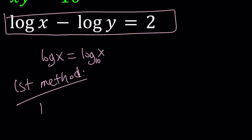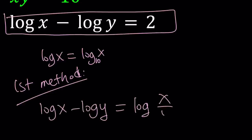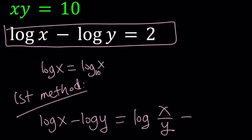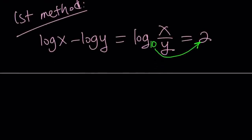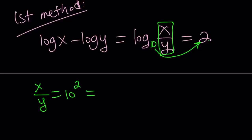So how can I write log x minus log y? I can write it as log(x/y). I have to be careful — x and y both have to be positive because of the domain. And that equals 2. Then I can use the definition of logarithms. Remember, the base is 10, so you can put a little invisible 10 there. The definition says 10 to the power 2 equals x over y. That's how logs work.